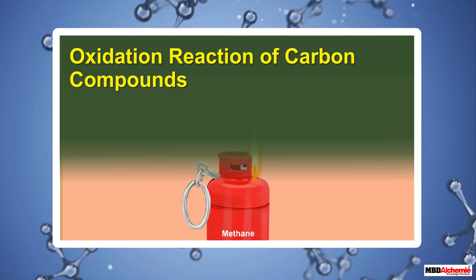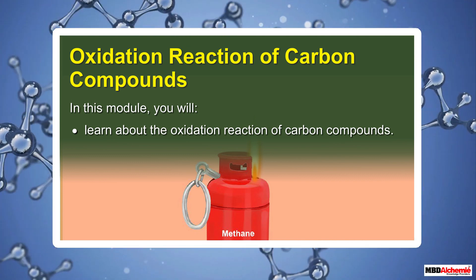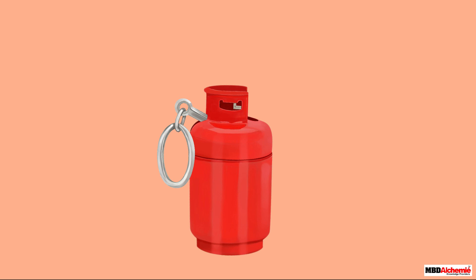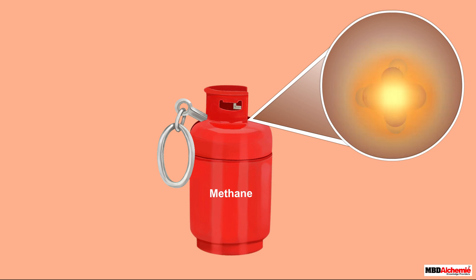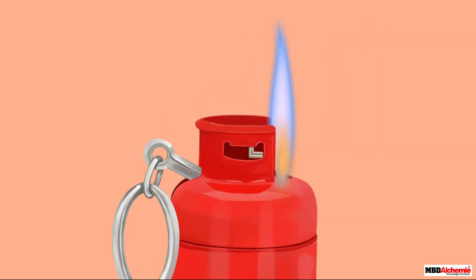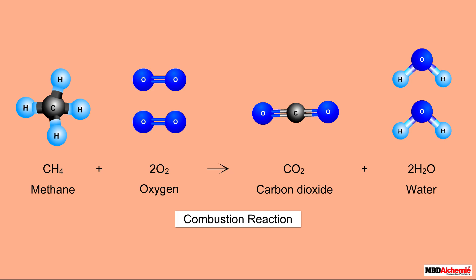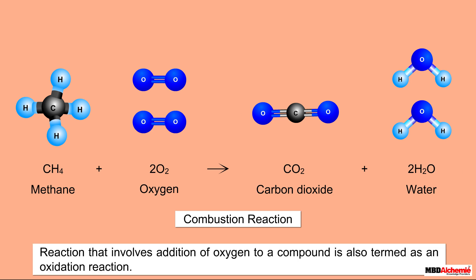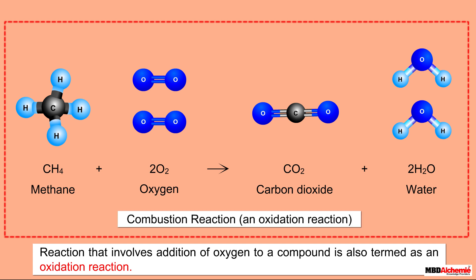In this module you will learn about the oxidation reaction of carbon compounds. We already know that carbon compounds, for example methane, undergo combustion in the presence of oxygen to give carbon dioxide, water, and energy. If we look at the structure of methane and that of the products of its combustion, we notice that oxygen is added to the atoms of a methane molecule. The chemical reactions that involve the addition of oxygen to a compound are termed as oxidation reactions. Combustion is not the only oxidation reaction of carbon compounds, but there are many others.